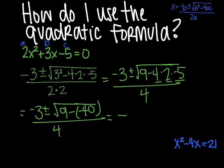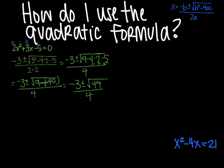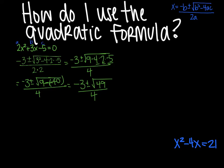So I have negative 3 plus or minus the square root of 49 all over 4. And we are getting closer. This can simplify to negative 3 plus or minus 7, square root of 49 is 7, all divided by 4.